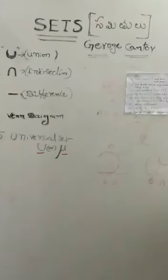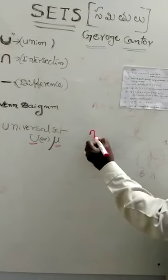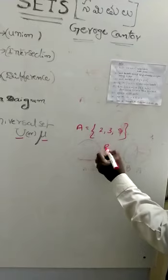Again students, now I can explain this simple problem. So A = {2, 3, 8}, B = {6, 10, 11}.